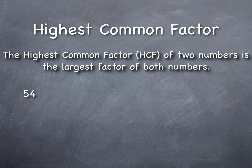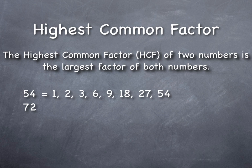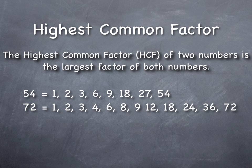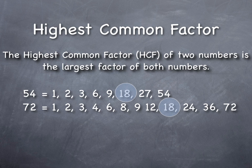So if I want to know what is the highest factor that is common to both 54 and 72, I might need to list out all of the factors of 54, then list out all of the factors of 72, and then look for which of those is the largest. In this case that would be 18. But is there an easier way? Do we want to actually list every single factor? Especially when numbers get larger, that can be tricky.